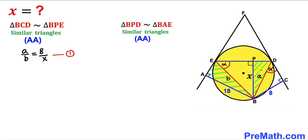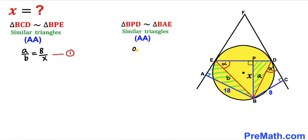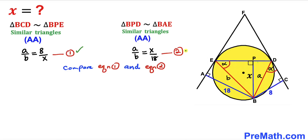Now let's focus on two other right triangles: triangle BPD and triangle BAE. We conclude these two triangles are also similar according to the angle similarity theorem, giving us another proportion: A divided by b equals x divided by 18. Let me call this equation 2. Comparing equations 1 and 2, since the left-hand sides are the same, we can equate the right-hand sides.